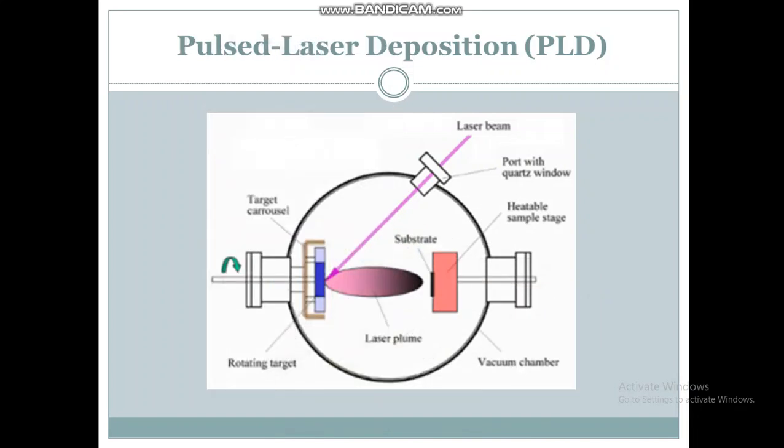In pulsed laser deposition, a laser beam is focused on the target material, producing vapors. These vapors strike the substrate positioned opposite to the beam and are deposited on it. The entire process is carried out in a vacuum chamber.